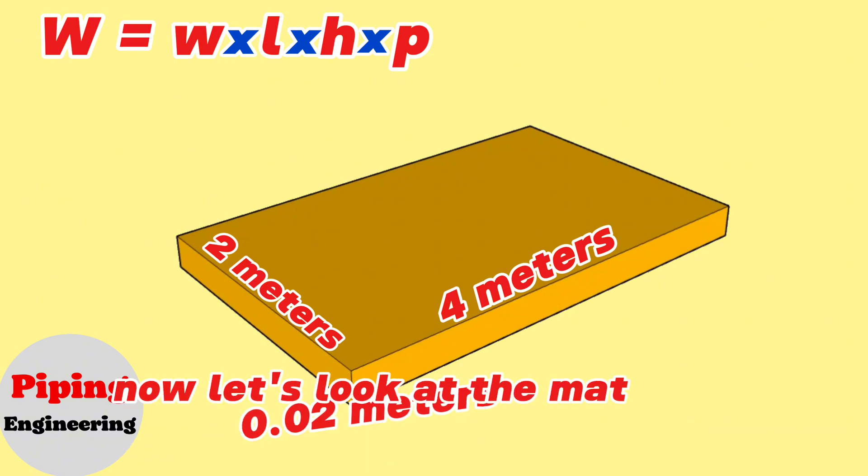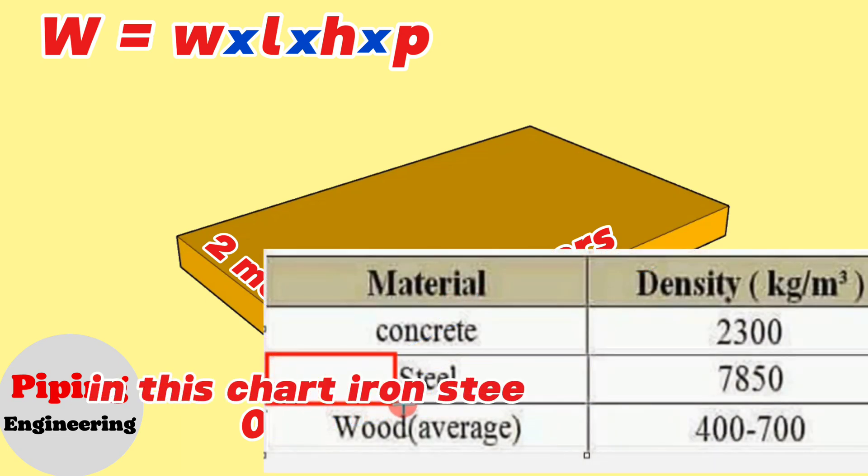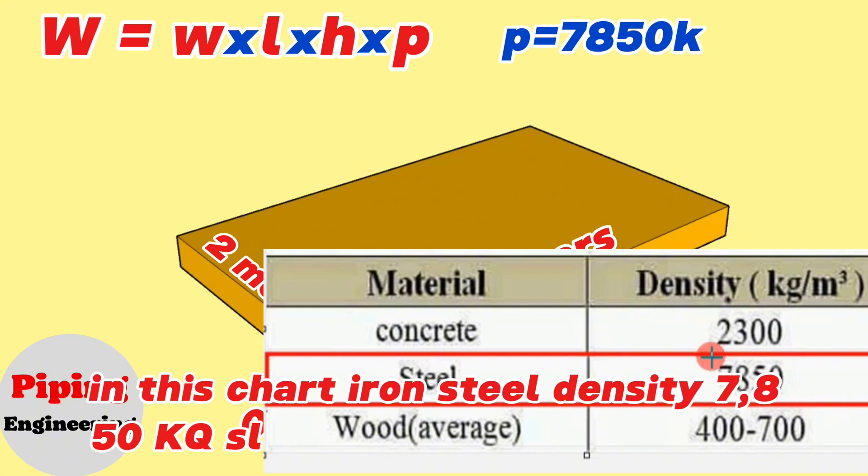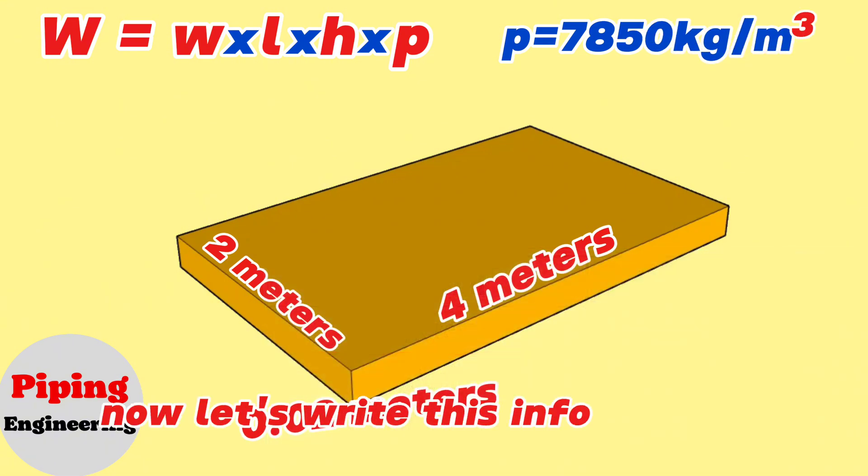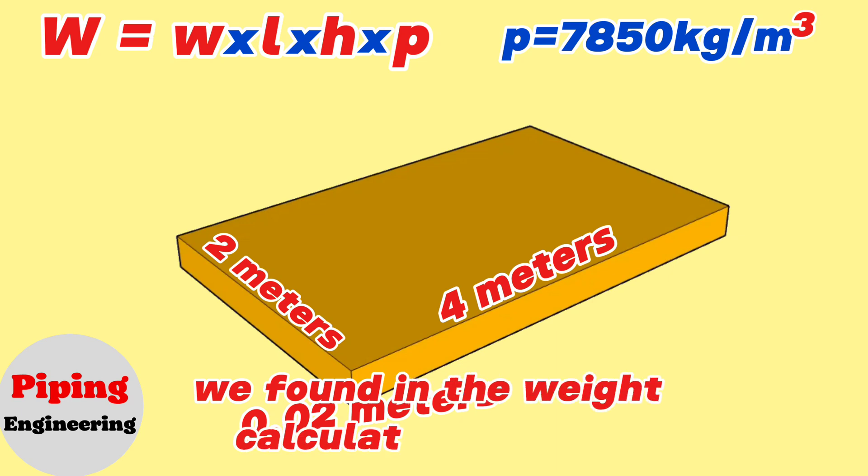Now let's look at the materials density chart to find the density of iron material. In this chart, iron steel density 7850 kg/m³ is shown. Now let's write this information as we found in the weight calculation formula.